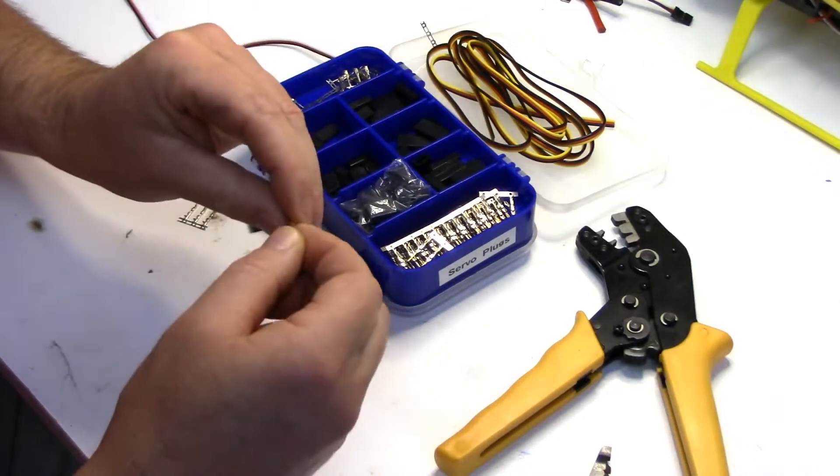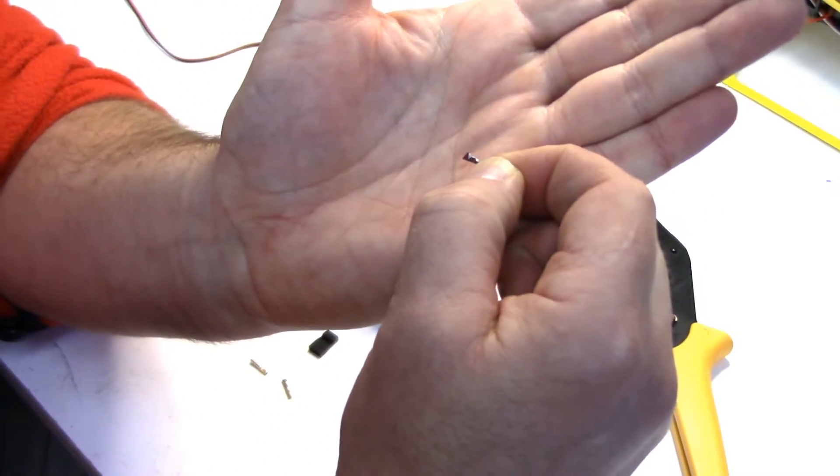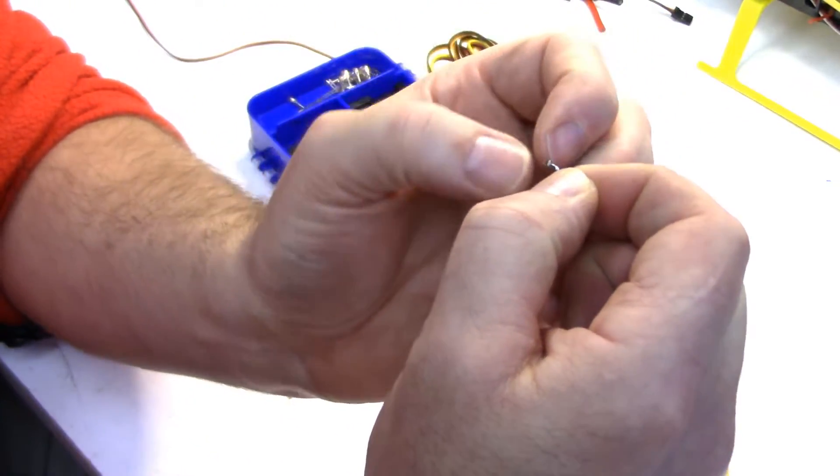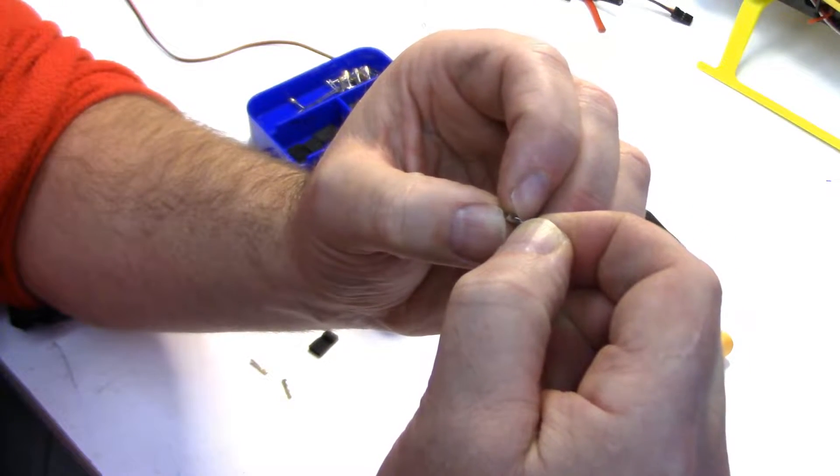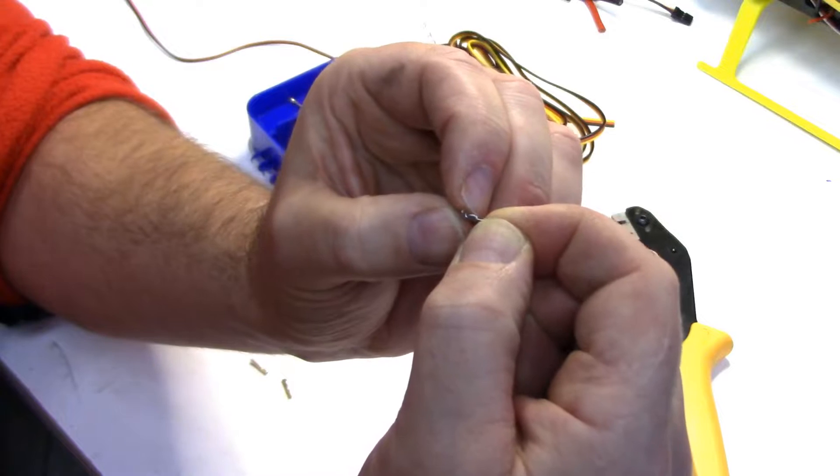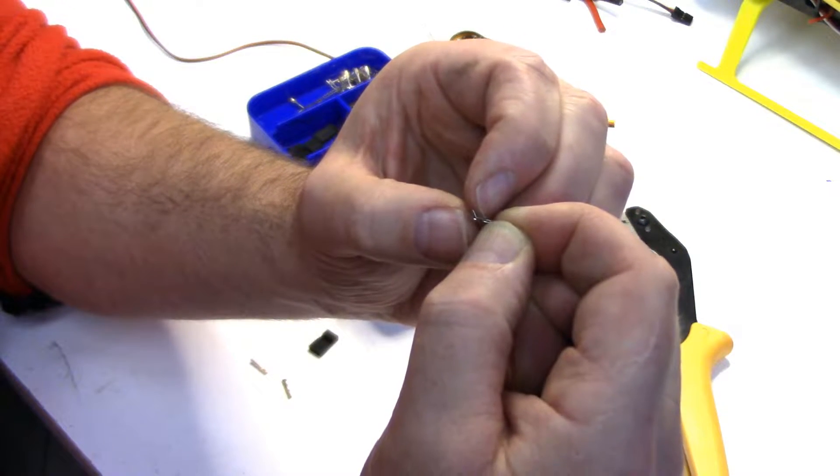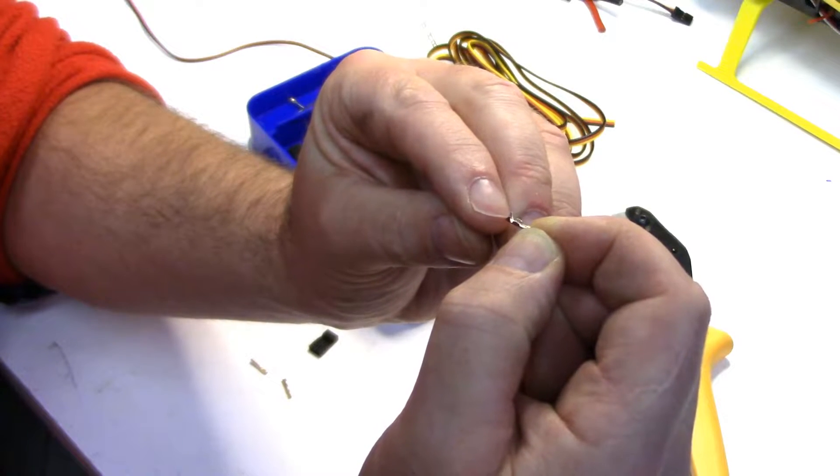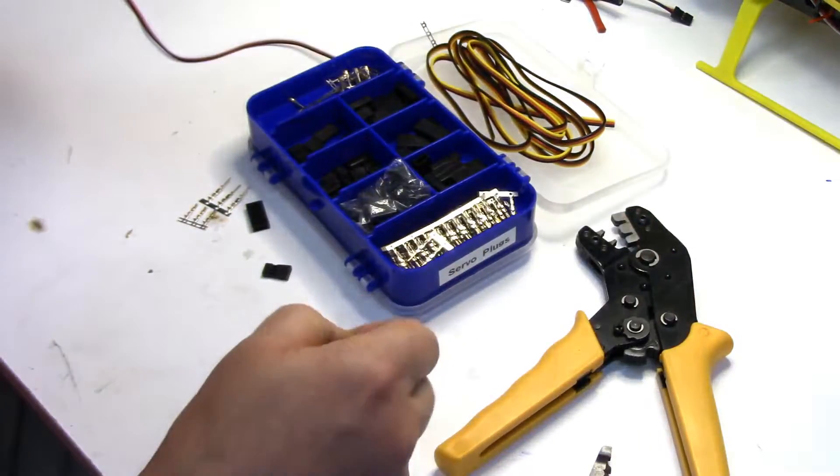And like I showed with the JST connector video, when you strip the wire you want basically two to three millimeters of stripped wire. That is going to be crimped by the center section when you crimp it. And then this outer section is actually what wraps around the insulation of the wire and holds it.